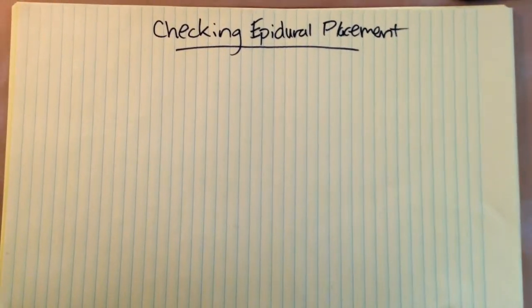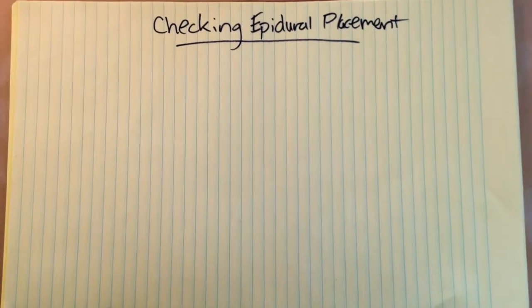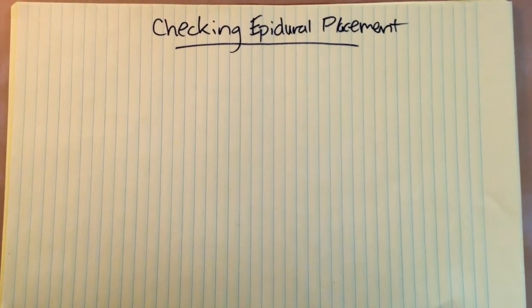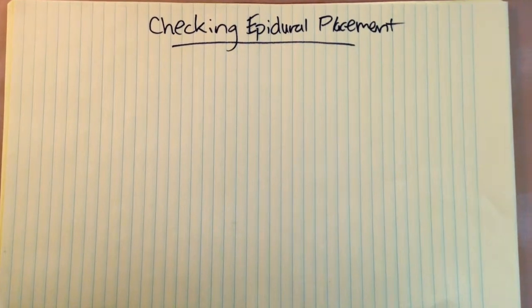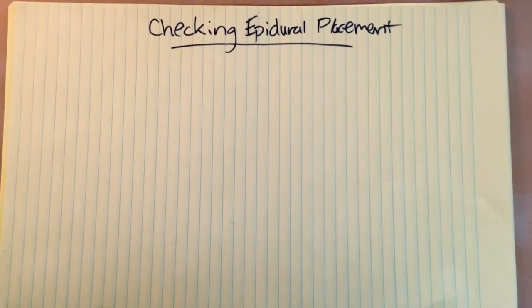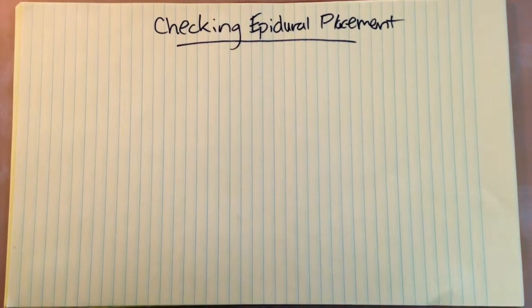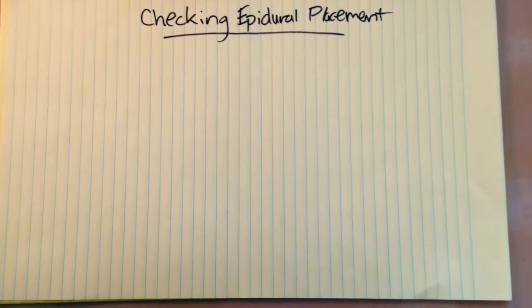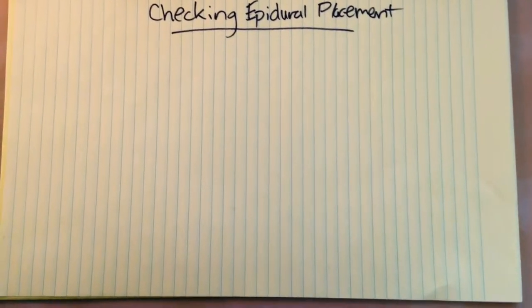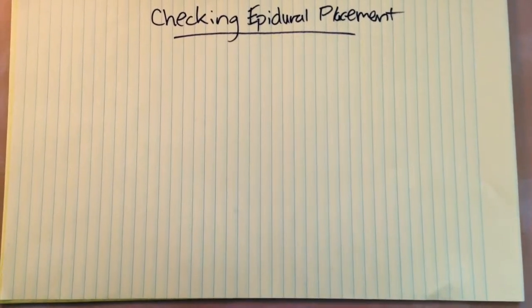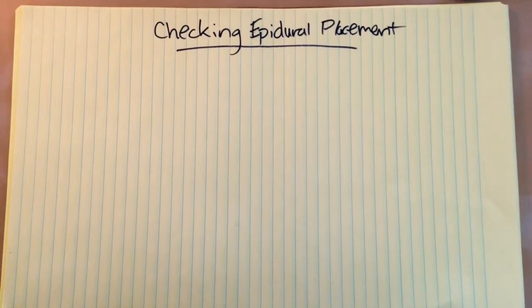The question I was asked was: how can you exclude that from your differential diagnosis, or how can you make yourself comfortable that your epidural is not actually in the intrathecal space or in the intravascular space? And I didn't know how to necessarily answer that question, because I hadn't really thought of it before in a setting where you yourself didn't put the epidural in and you're assessing somebody else's work afterwards.